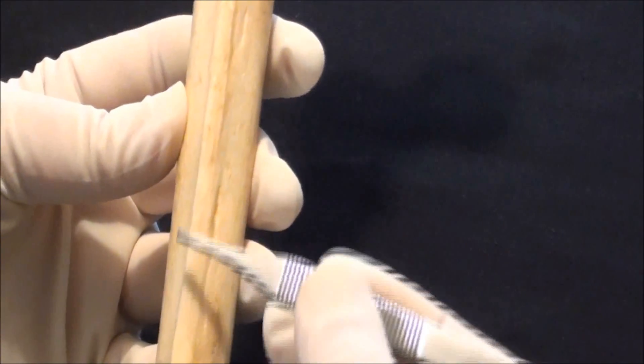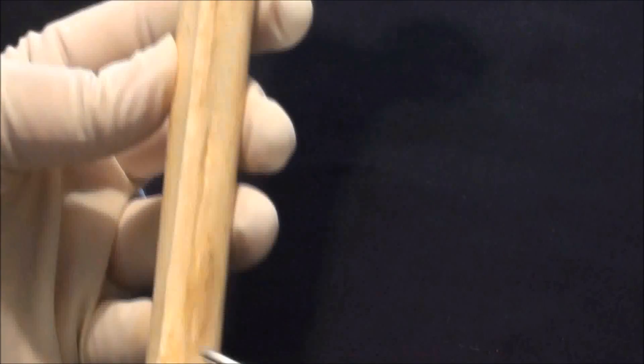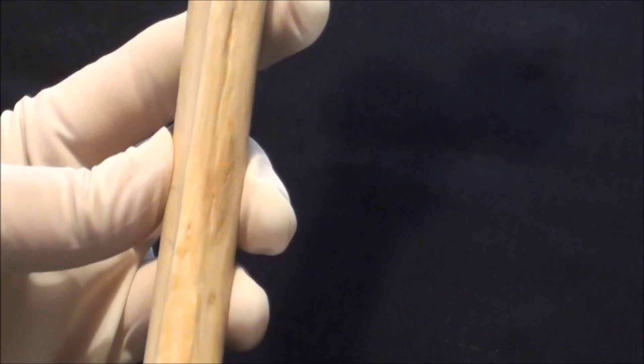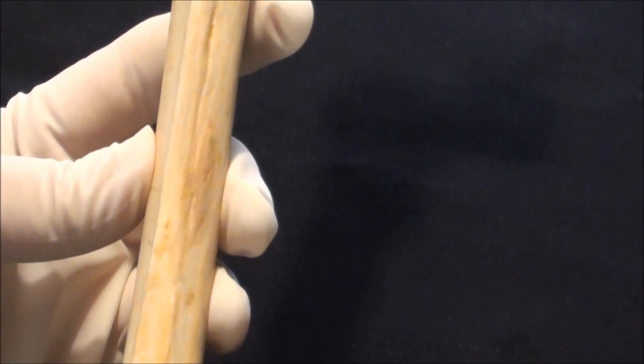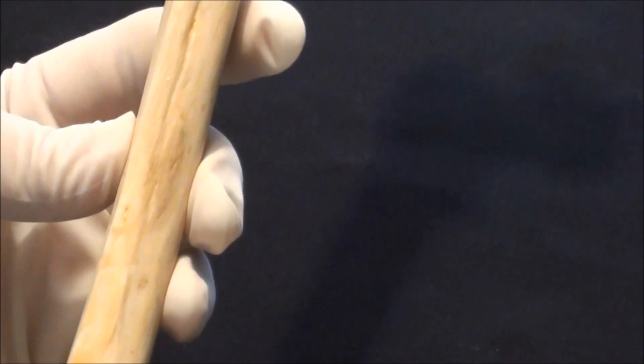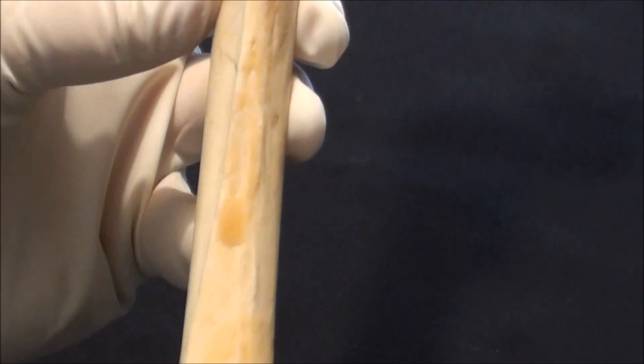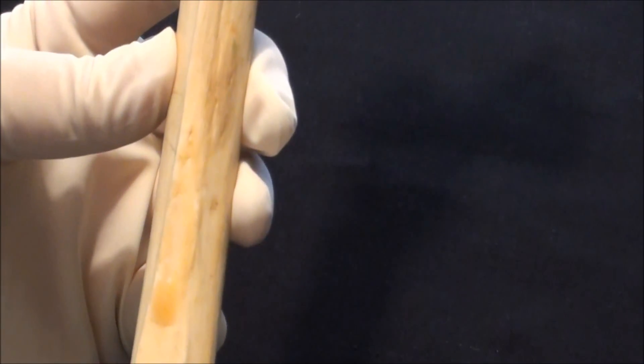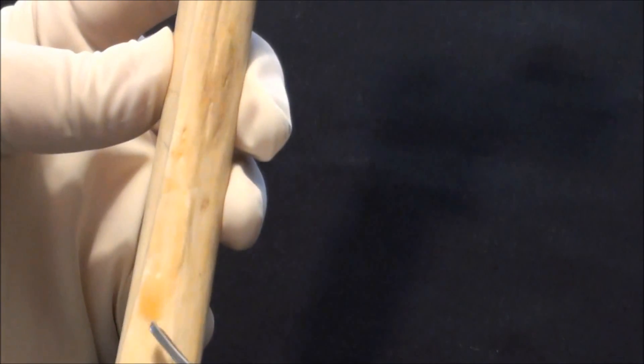Linea aspera also continues inferiorly towards condyles of a femur but this time we're not using same terms such as medial or lateral lip but rather use different terminology. Inferiorly, linea aspera splits into lateral and medial supercondylar lines or supercondylar ridges. I believe that it is possible to see them here. I'll just play with the bone in order to show them with a different light refraction. So this is the lateral and this is the medial supercondylar line or medial supercondylar ridge.